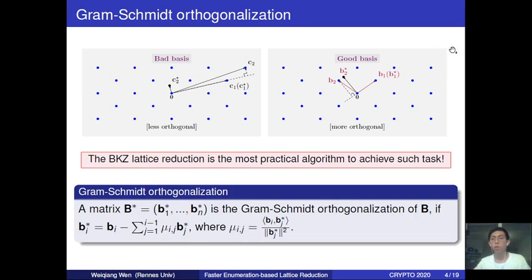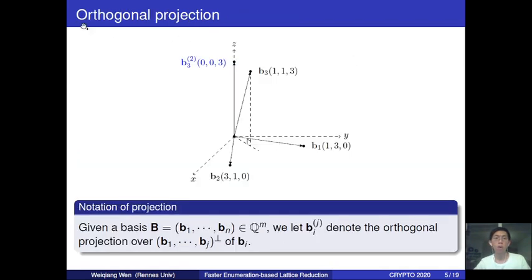To continue, I need to introduce another notation called orthogonal projection. For example, I will use B3_{[3,2]} to denote B3 after removing the projection over the space spanned by the first two basis vectors.